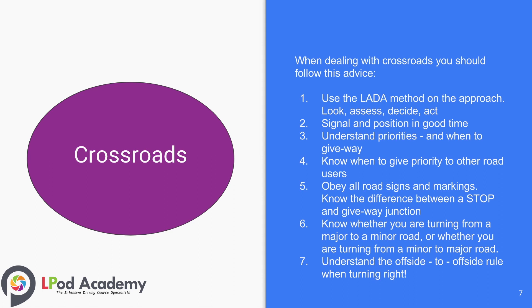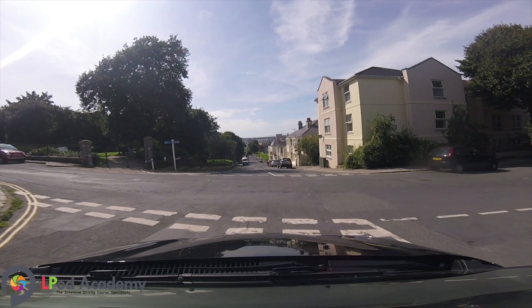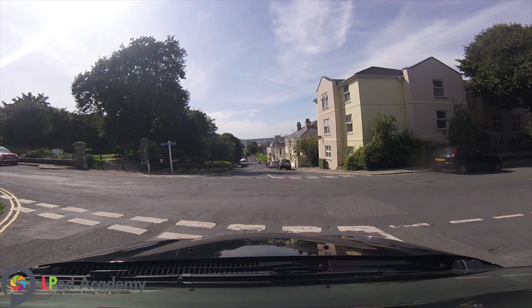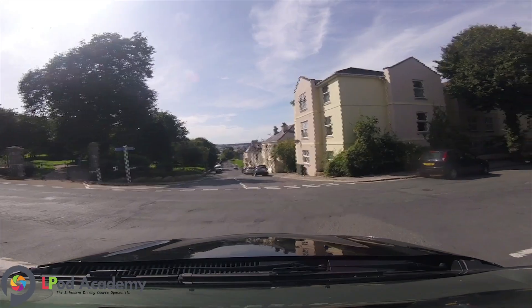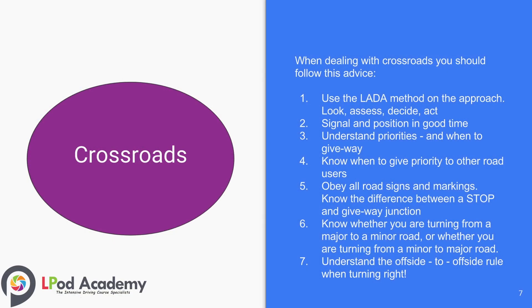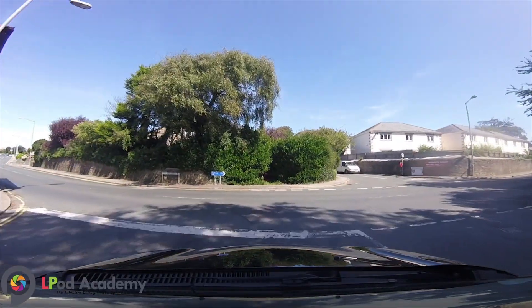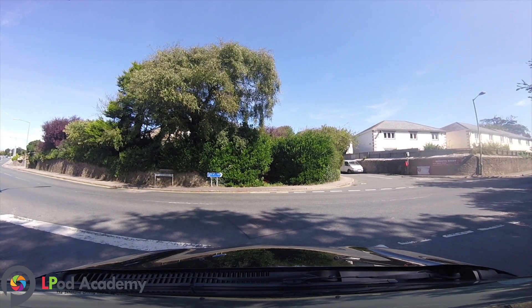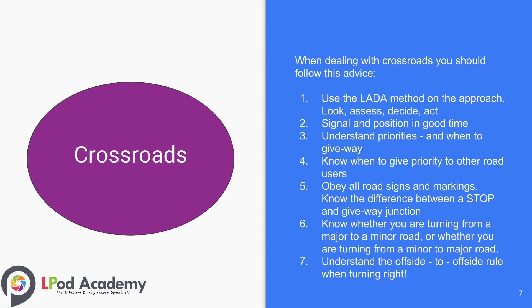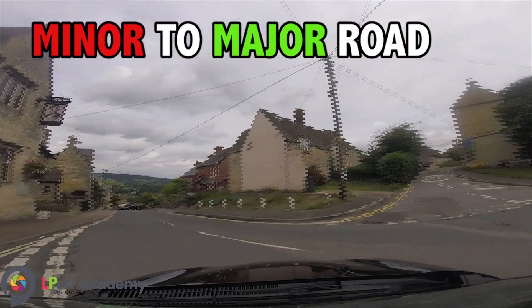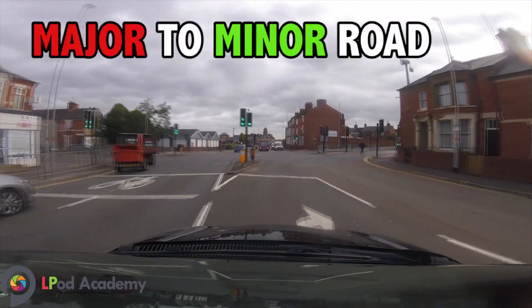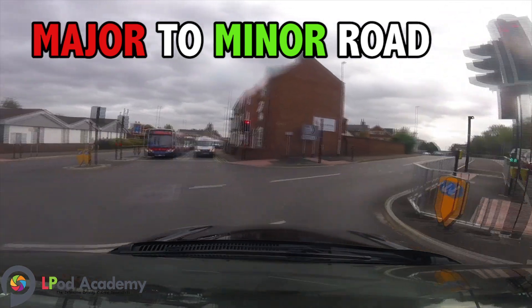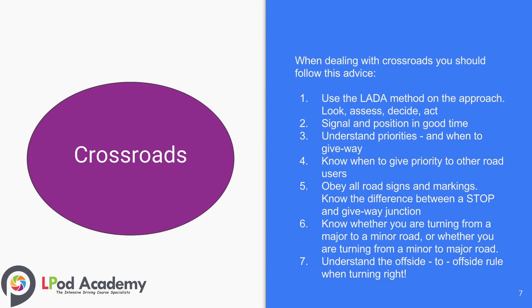You should also know when to give priority to other road users. You should know whether you are turning from a major to a minor road, or whether you are turning from a minor to a major road. You should also be able to understand the offside to offside rule when turning right.